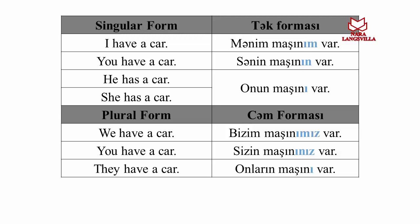Plural form — cəm forması. We have a car. Bizim maşınımız var. You have a car. Sizin maşınınız var. They have a car. Onların maşını var.